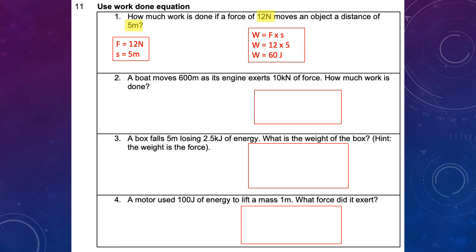Please do not forget the units. On GCSEs you may earn one point for choosing the correct formula and another for substituting correctly. Before you start questions 2, 3, and 4: numbers 2 and 3 give you 10 kilonewtons of force and 2.5 kilojoules of energy — these are not in SI units, so please convert them before using those numbers.